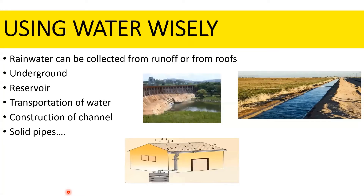Now let's see how water can be used wisely. Many parts of the world have irregular rainfall, so rainwater can be collected from field runoff or from rooftops of buildings for later use. Farmers can also access underground water supplies such as boreholes. Water can be stored in underground or covered sources for future use, as this reduces water loss, though it is expensive to construct. Water stored in reservoirs can also be used, but water loss through evaporation is greater. Transportation of water through canals can be wasteful because dry soil absorbs much of the water before it reaches the plant.